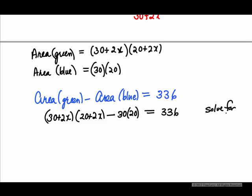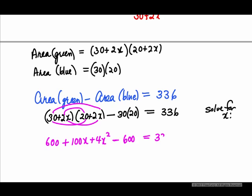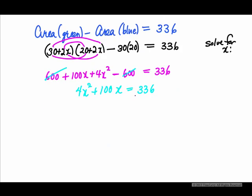We need to get zero on one side, but first we FOIL to remove parentheses. That gives 600 plus 40x plus 60x plus 4x squared, minus 600, equals 336. Combining like terms: 4x squared plus 100x equals 336. Subtracting 336 from both sides gives 4x squared plus 100x minus 336 equals zero.